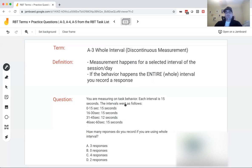So question. You are measuring on-task behavior. Each interval is 15 seconds. The interval went as follows: First 15 seconds, 15 seconds. Second 15 seconds, 15 seconds. Third 15 seconds, only 12 seconds. Fourth 15, the entire time. So if we're using whole interval data, how many responses do you record? Is it three, zero, four, or two?